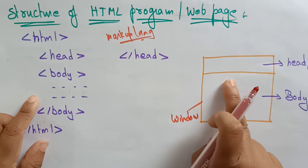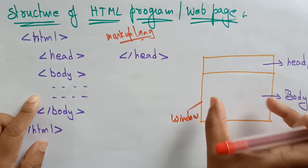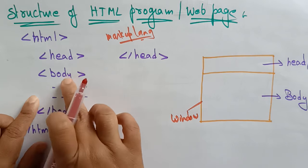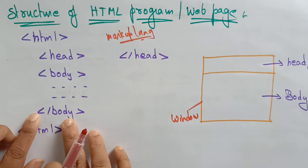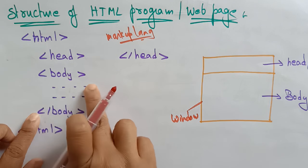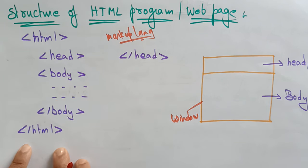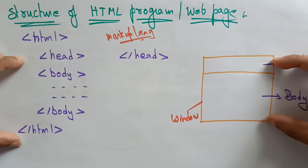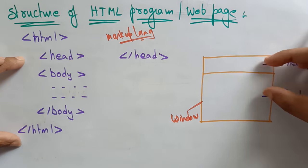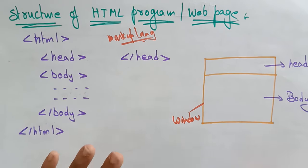In the body section, whatever content you want to be displayed must be written between the body start tag and body end tag. Everything should be present inside, and finally you close the HTML tag. This structure creates the page with those two main sections.